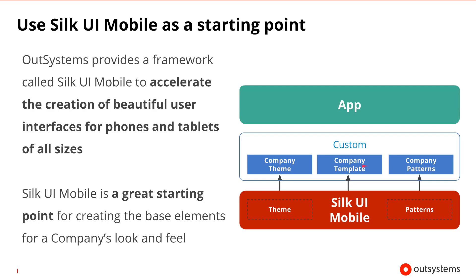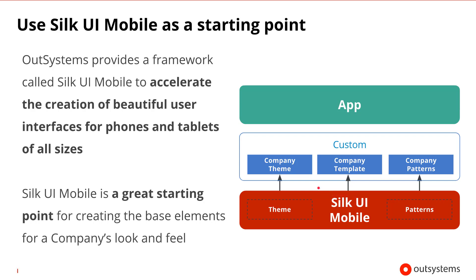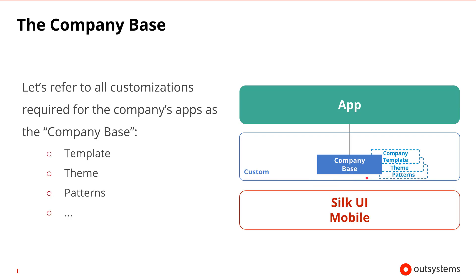OutSystems provides a framework called Silk UI Mobile to accelerate the creation of beautiful user interfaces for phones and tablets of all sizes. Silk UI Mobile is a great starting point for creating these base elements for a company's look and feel. To simplify, let's refer to all customizations required for the company apps as the company base. All customized elements in the company template, theme, and patterns become part of that company base. Let's walk through a scenario and see how we would use the company base and evolve it into a scalable frontend architecture.